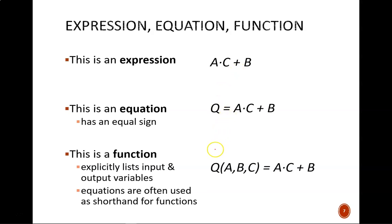A function also has an equal sign, but it explicitly identifies the input and output variables. Based on this notation, it is clear that A, B, and C are input variables, while Q is the output variable.